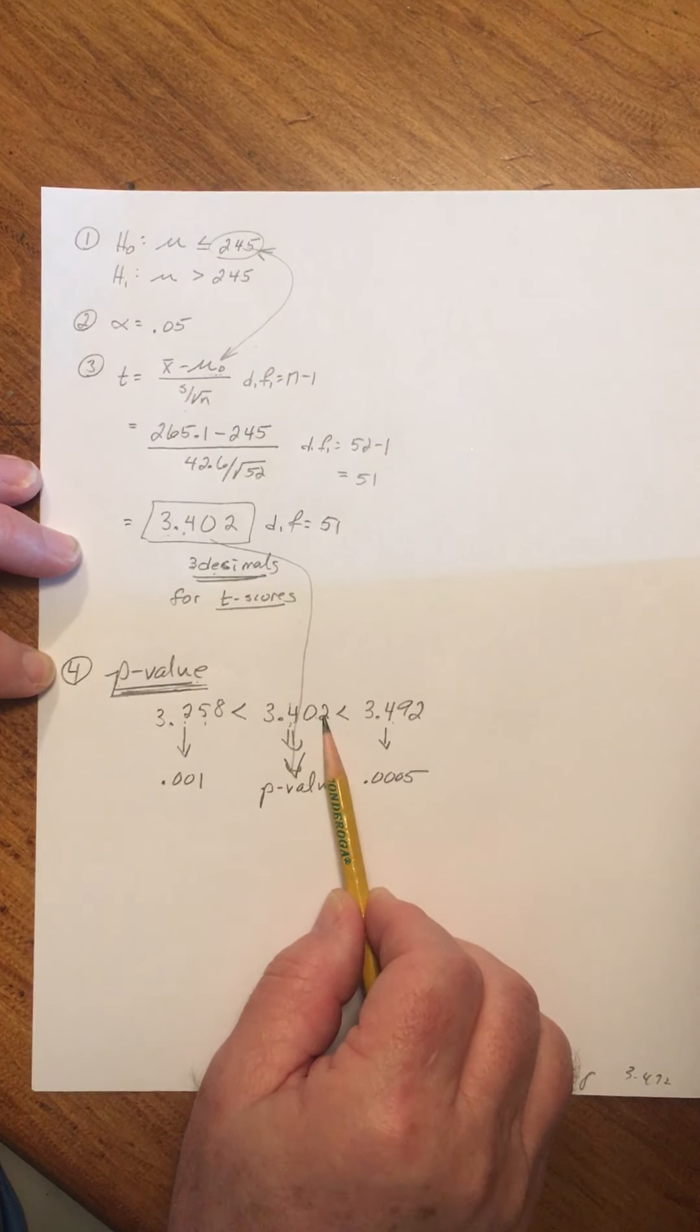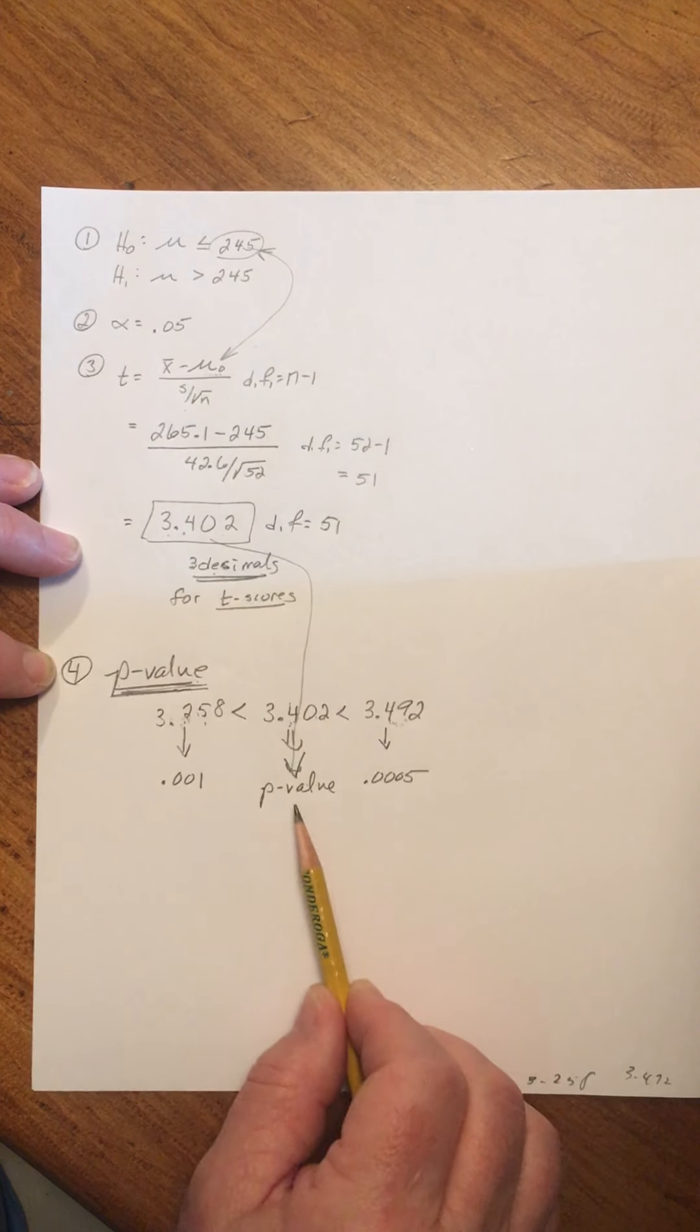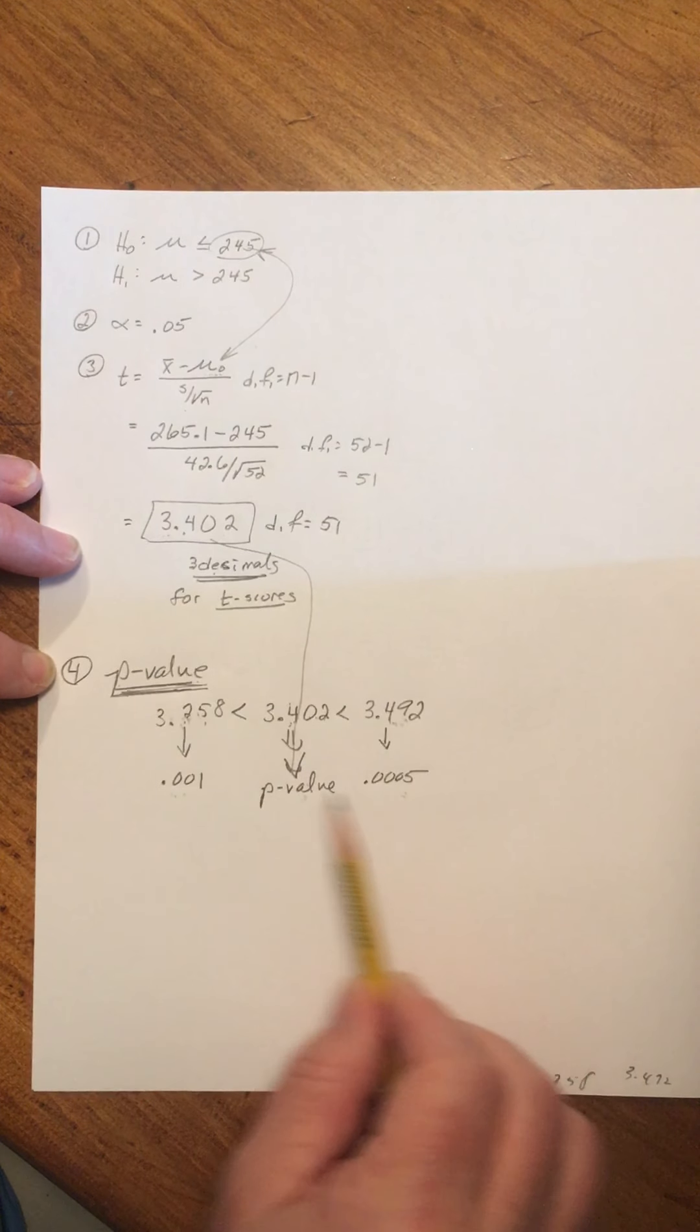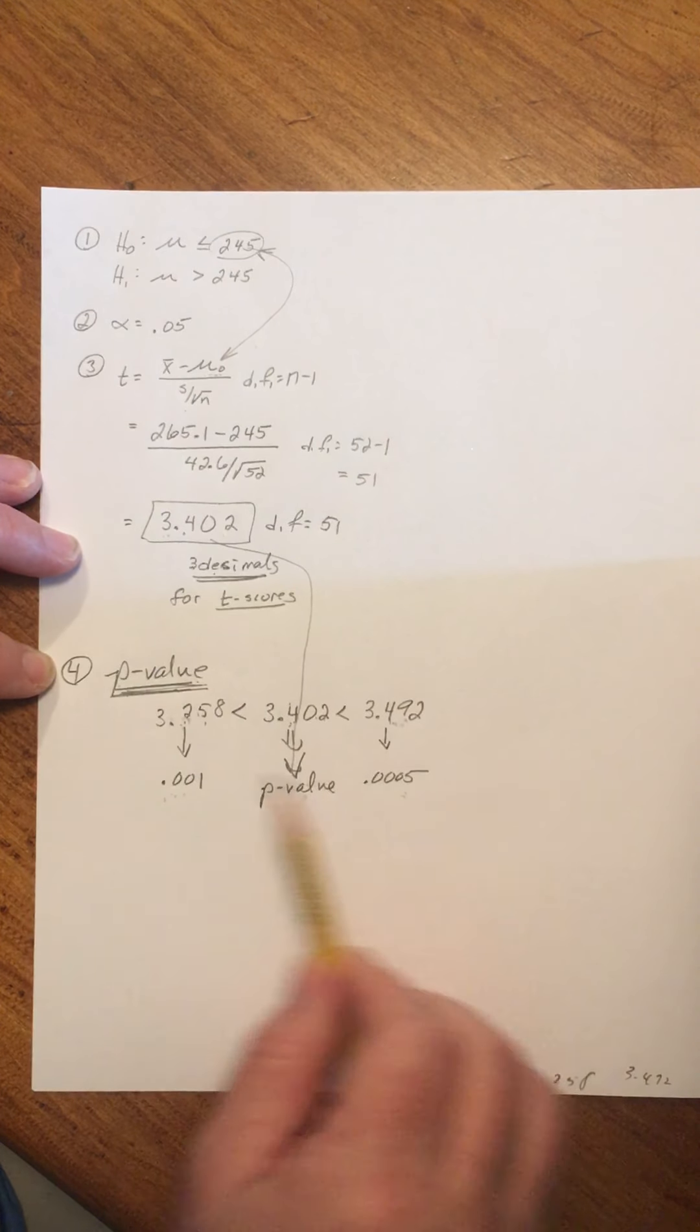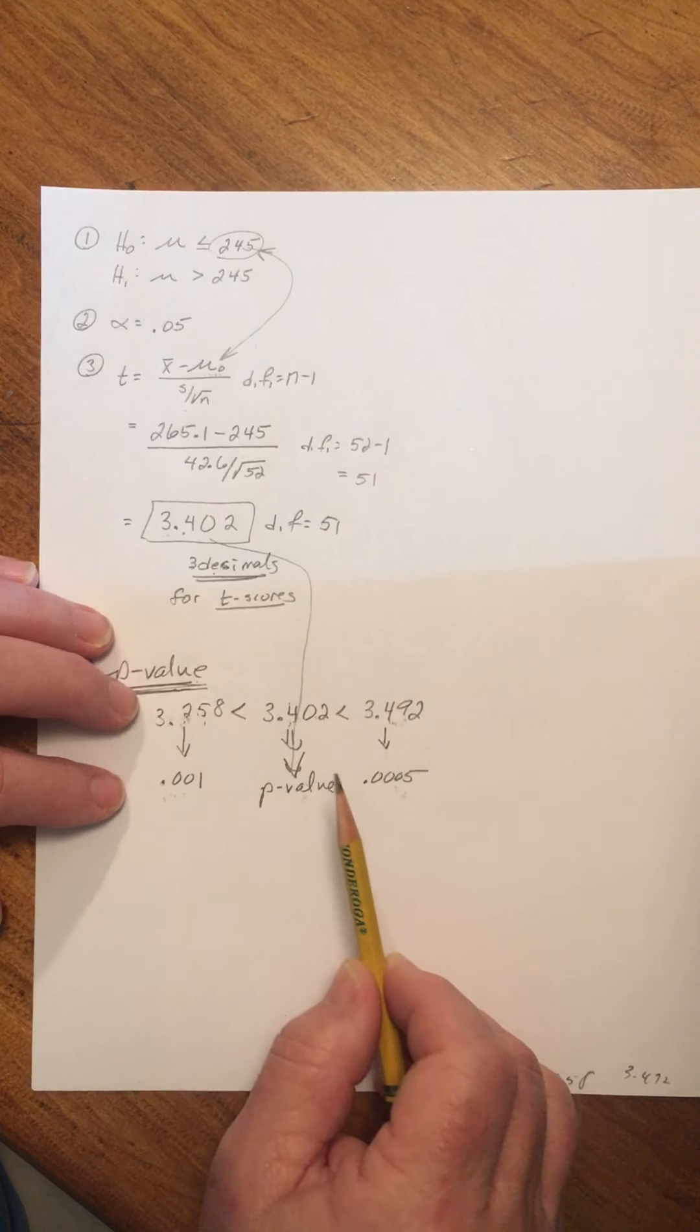But what we can find is this: since 3.402 falls between these two numbers, the p-value we seek falls between these two numbers. That's all we need to know.